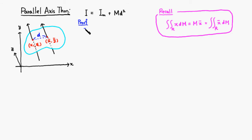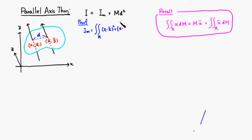We can find the moment of inertia about the center of mass — it's simply a double integral over region R of (x minus x-bar) squared plus (y minus y-bar) squared, times the mass element dm. That gives us the moment of inertia about the center of mass.